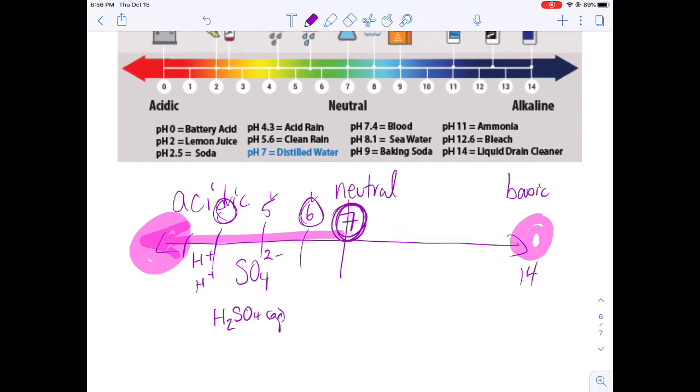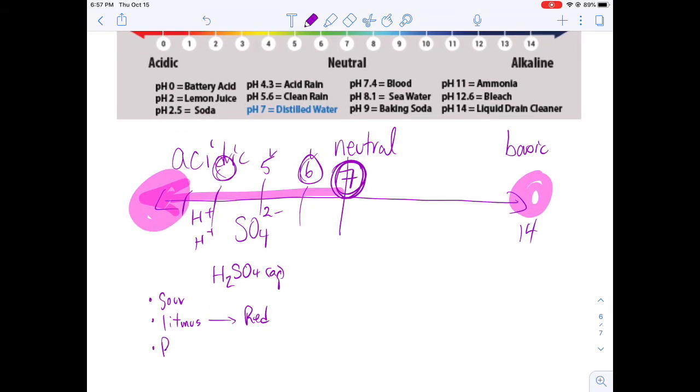Acidic substances are sour, turn litmus red, react with metal to make hydrogen gas, and conduct electricity, so they're electrolytes.